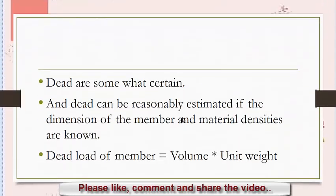Dead loads are somewhat certain and can be reasonably estimated if the dimensions of the members and material densities are known. By using the simple formula: Dead load of a member equals volume of the member times its unit weight. A detailed video on how to calculate dead loads of the beam is already uploaded and you can find the link of that video in the description box.